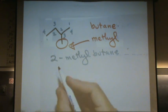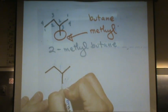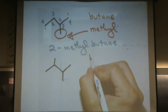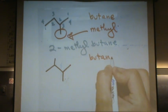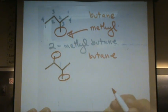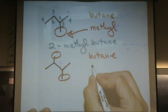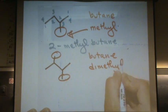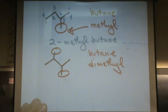Let's make it a little more fun. Let's name this. What's the longest chain? It's still a butane. How about the branch? Yeah, there's two of them. So it's not just a methyl, now it's a dimethyl.